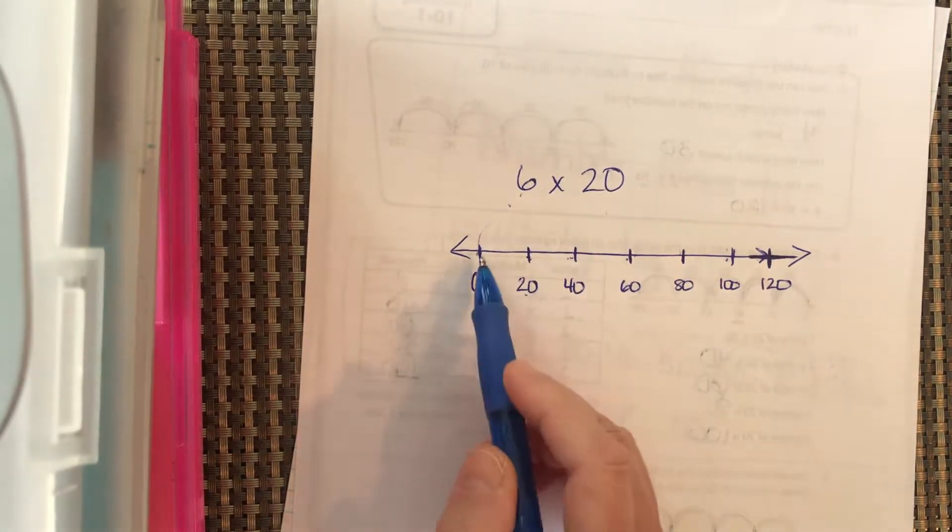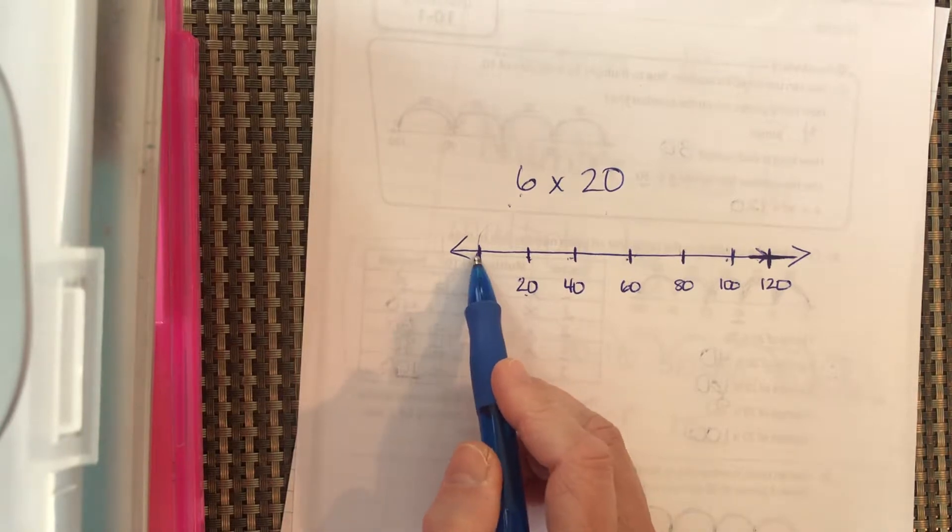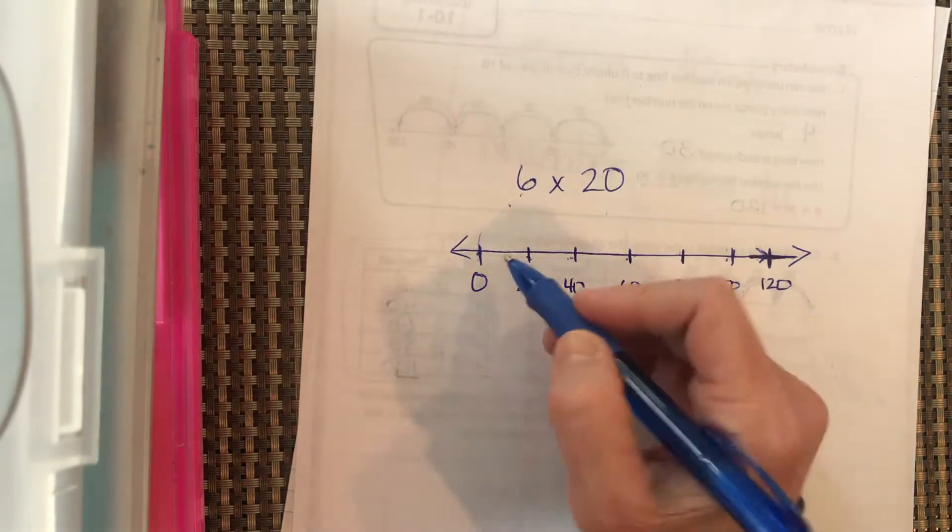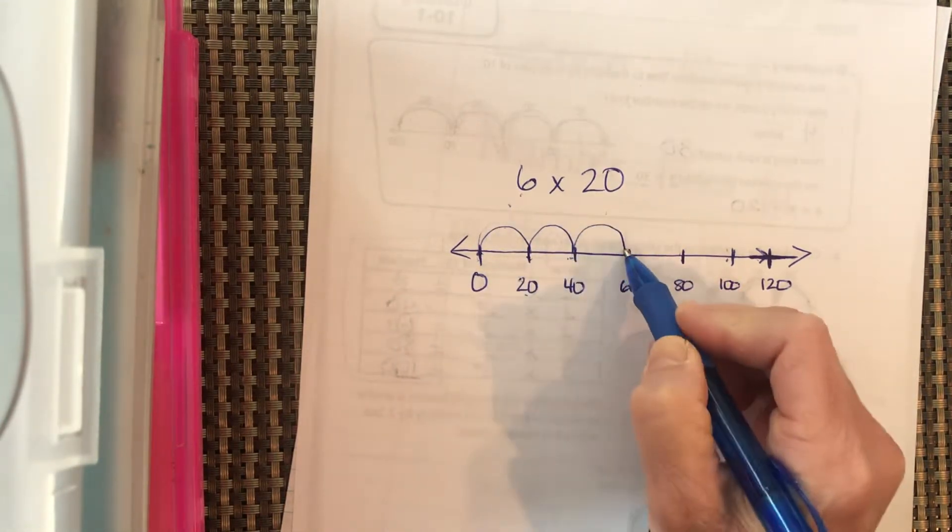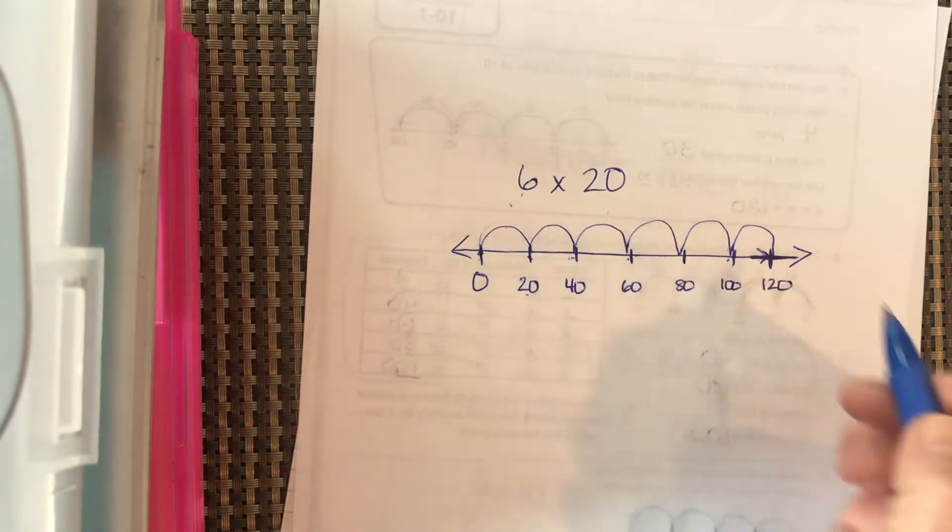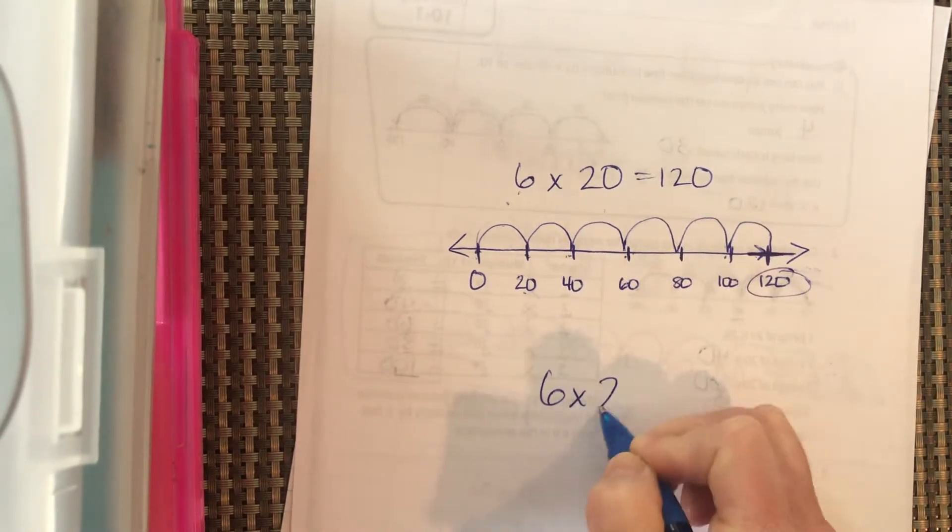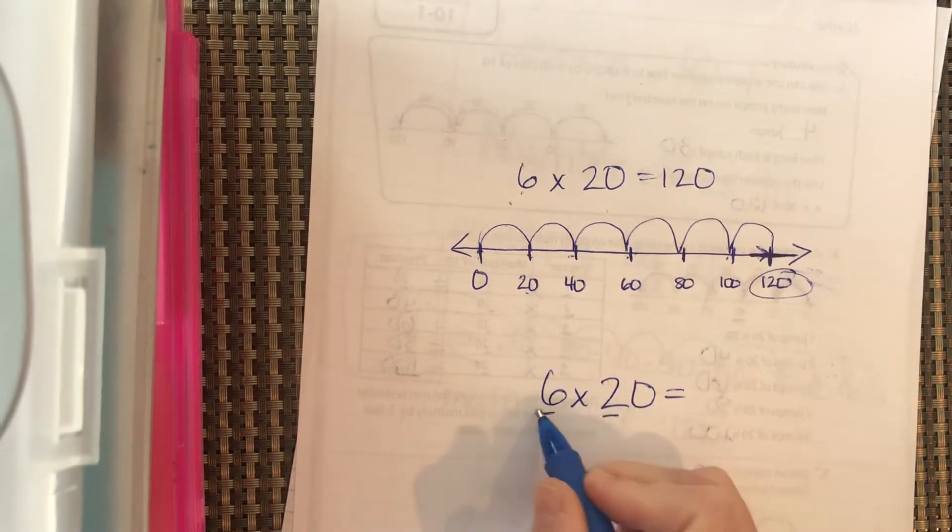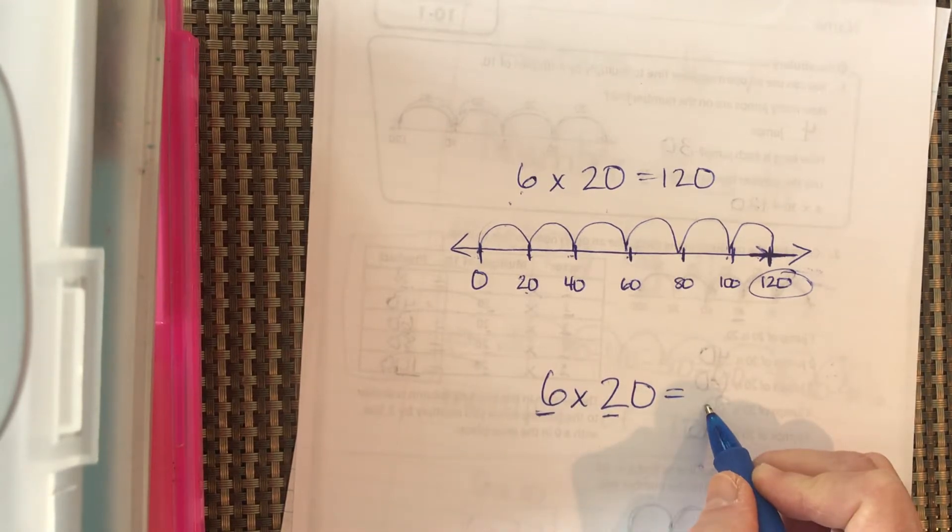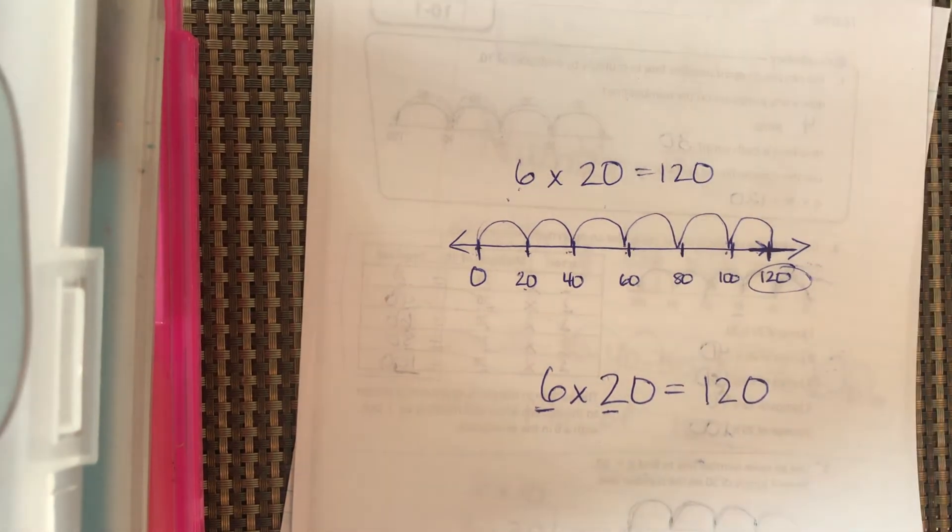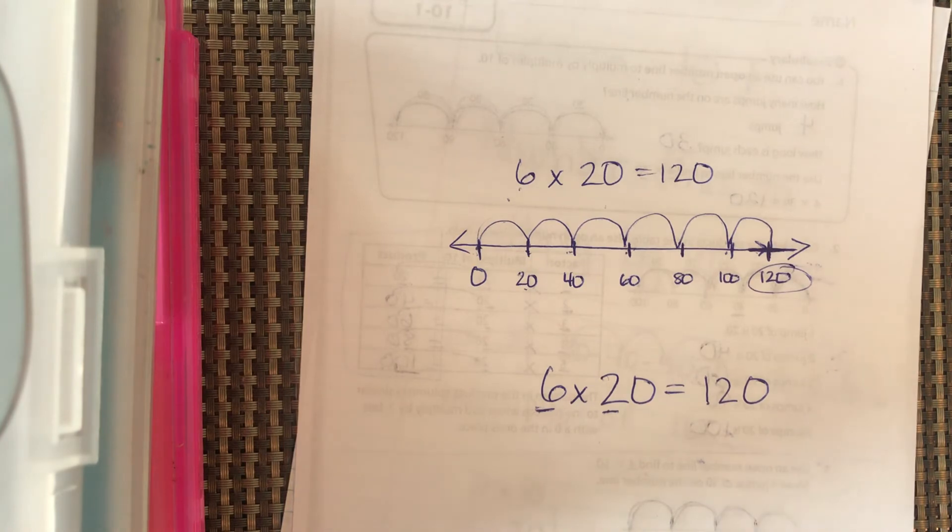One, two, three, four, five, six. So now show me, show me how to do it this way. We do six times two equals, write the answer right there, and then bring your zero over. So six times two equals 12 and bring your zero over. Good job. Good job. Let's go. Wonderful. Thank you.